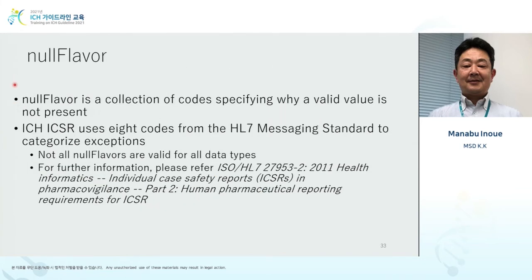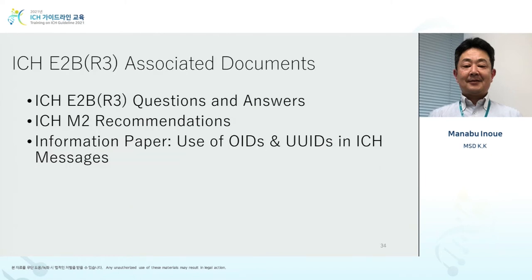Next, null flavor. E2B R3's message is based upon HL7 message. Null flavor's definition in HL7 is specifically for being 'not clear.' But in case of being not clear, there could be different categories — for example, an inquiry was sent to the reporter but it's not clear, or there was no inquiry. Depending on the case, you can select the appropriate option. There are also associated documents, which include E2B R3 questions and answers.